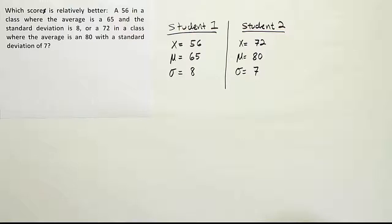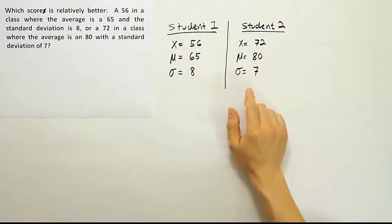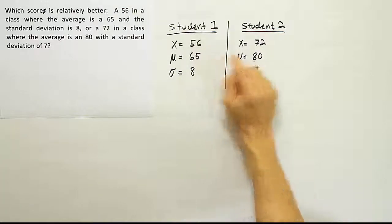The first thing I want to pay attention to here is the fact that both students did below average. Obviously, if one student was above average and the other was below average for his class, the above average student would be the winner right away. But we see that both of these scores are below their class averages.